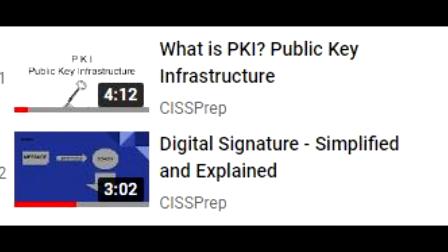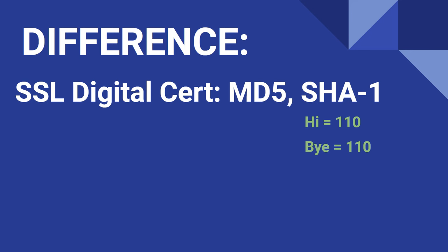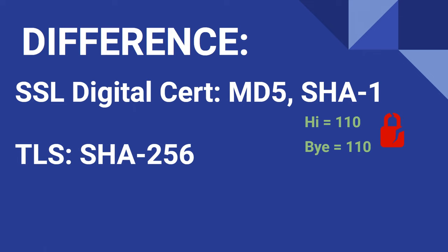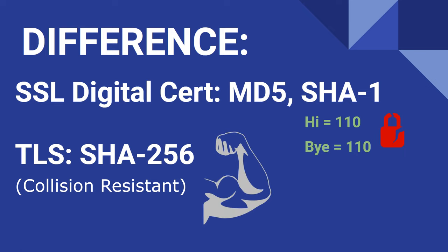We have videos on digital signatures and digital certificates that cover this information with some nice visuals too. Ideally, hashing functions should never produce the same output given any change to the input. TLS uses SHA-256, which is called collision resistance — meaning you can have an infinite number of inputs that will never produce the same output, at least with today's modern computing power.